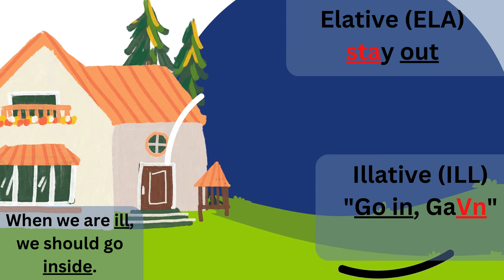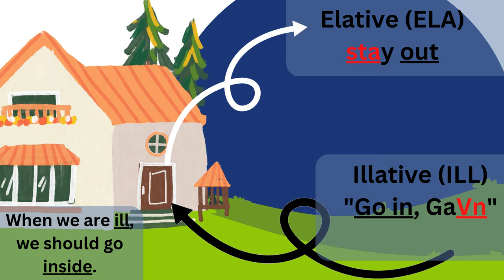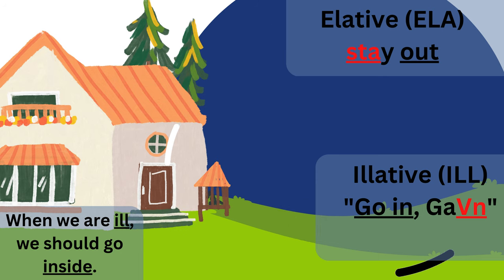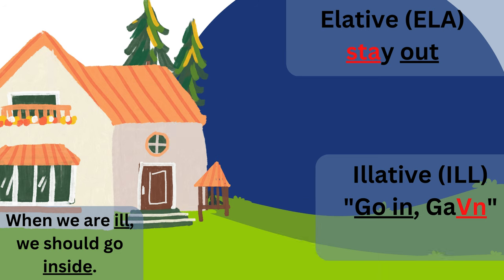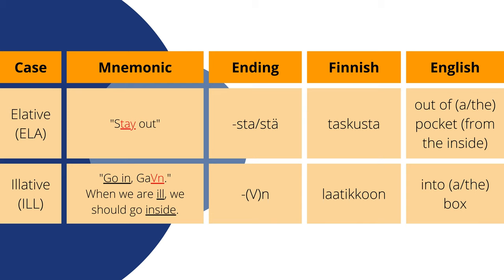The next case is the illative case. Its main function is going inside of something. It is the logical opposite of the elative case. So in the case of the house, it is walking into the door to go into the house. It can also refer to close contact with something, until a time specifically — like we are going to do something until the end of the week — or it can refer to the cause of something else. The mnemonic is 'go-in-gavin' because the case ending of the illative is vowel plus -in: we repeat the vowel at the end of the stem and then add -in. Our example for the elative is taskusta, meaning 'out of the pocket, from the inside.' Our example for the illative is laadikkoon, meaning 'into the box.'